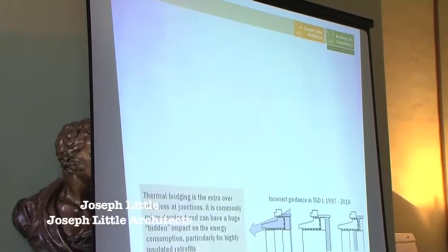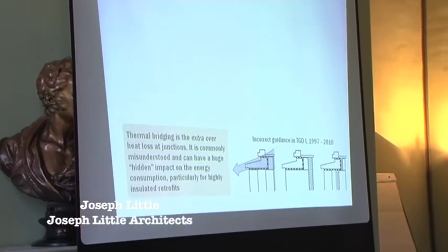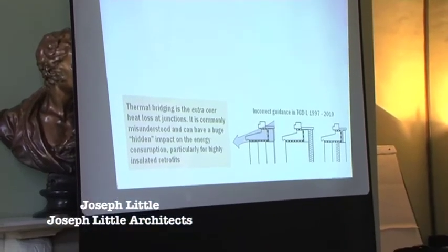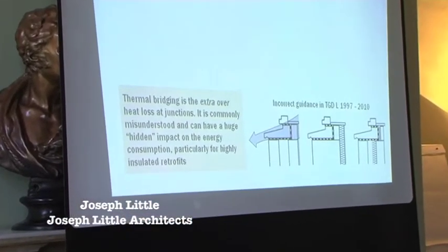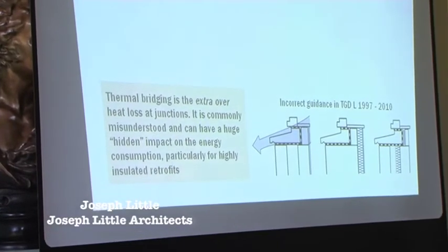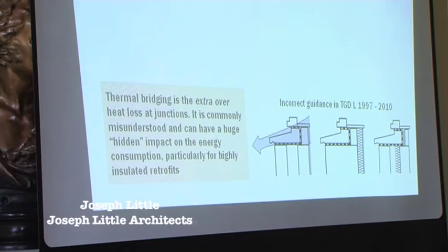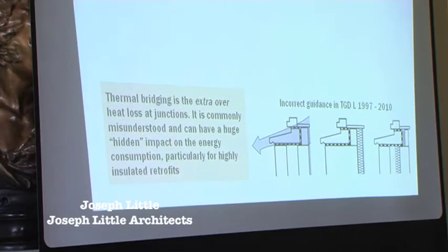So, starting off — what is thermal bridging? Very simply, it's the extra heat loss at junctions. It's not the heat loss at the junction overall — where that window meets that wall, or where two walls meet in the corner — those are two-dimensional junctions. The corner up there where the wall meets the two walls — that's a three-dimensional thermal bridge. It's the extra heat loss above the plain element heat loss.